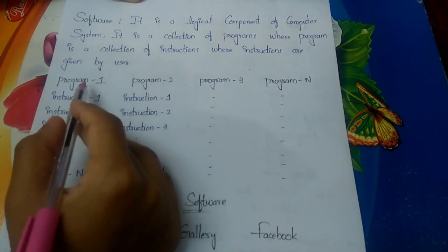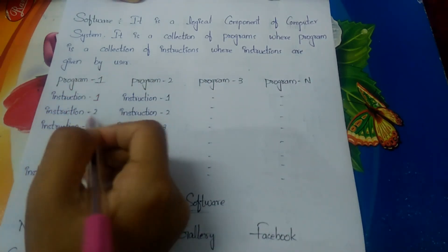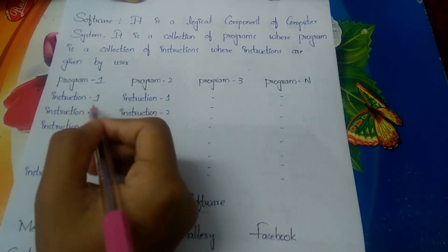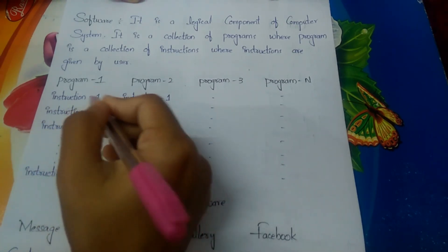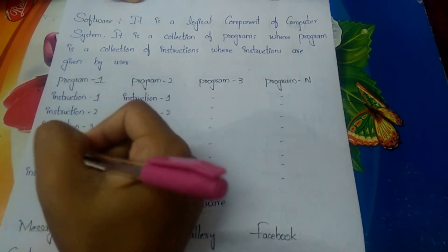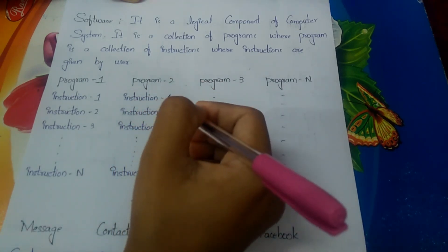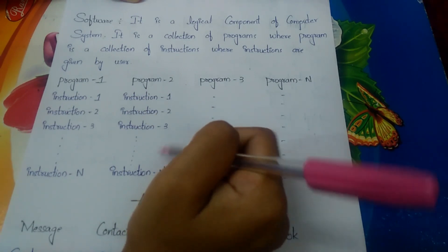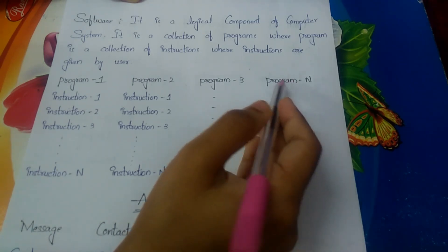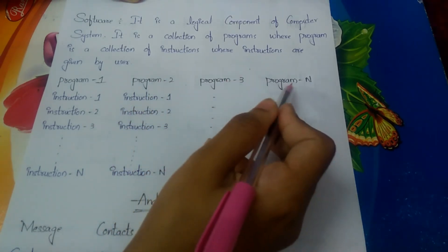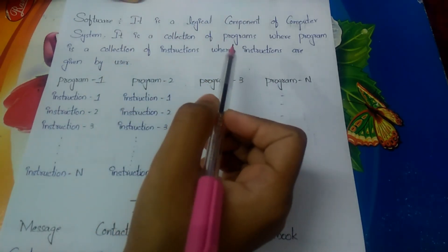For example, we can have Program 1, Program 2, Program 3, up to n programs. In each program we have a set of instructions: Instruction 1, Instruction 2, Instruction 3, and so on. This collection of instructions forms a program. Similarly, each program from 1 to n contains its own set of instructions, and the collection of all these programs constitutes a software.